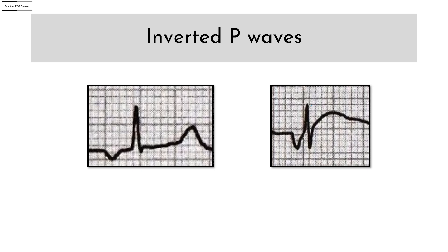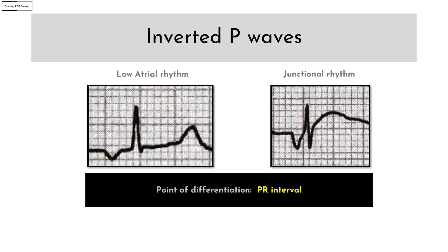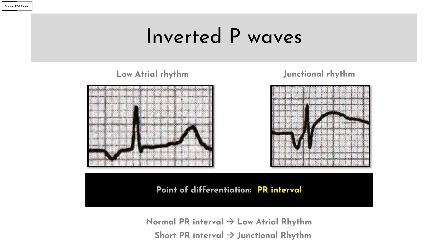Inverted P wave has two important DDs: low atrial rhythm and junctional rhythm. The point of differentiation here is the PR interval. If the PR interval is normal, that is suggestive of a low atrial rhythm — as you can see here, it is around four small boxes.